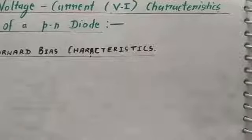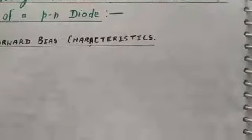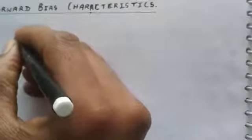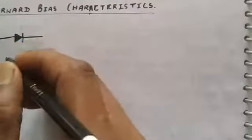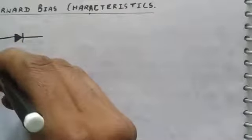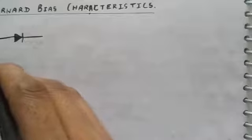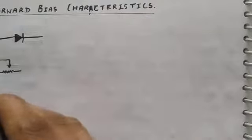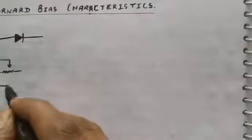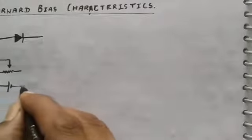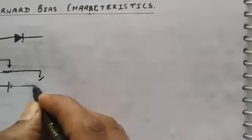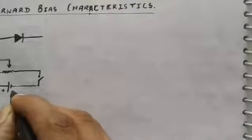For the forward bias characteristics, we connect the PN diode in forward arrangement. This is a voltage divider circuit, also called a rheostat device. We have a variable resistance connected to a power supply with a positive and a negative terminal. There is a switch in open condition, a positive supply and a negative supply.